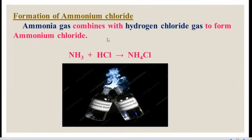The last example is formation of ammonium chloride. Ammonia gas will combine with hydrogen chloride gas and it produces ammonium chloride. Two substances combine together and produce a new substance, therefore this is also an example of a combination reaction.